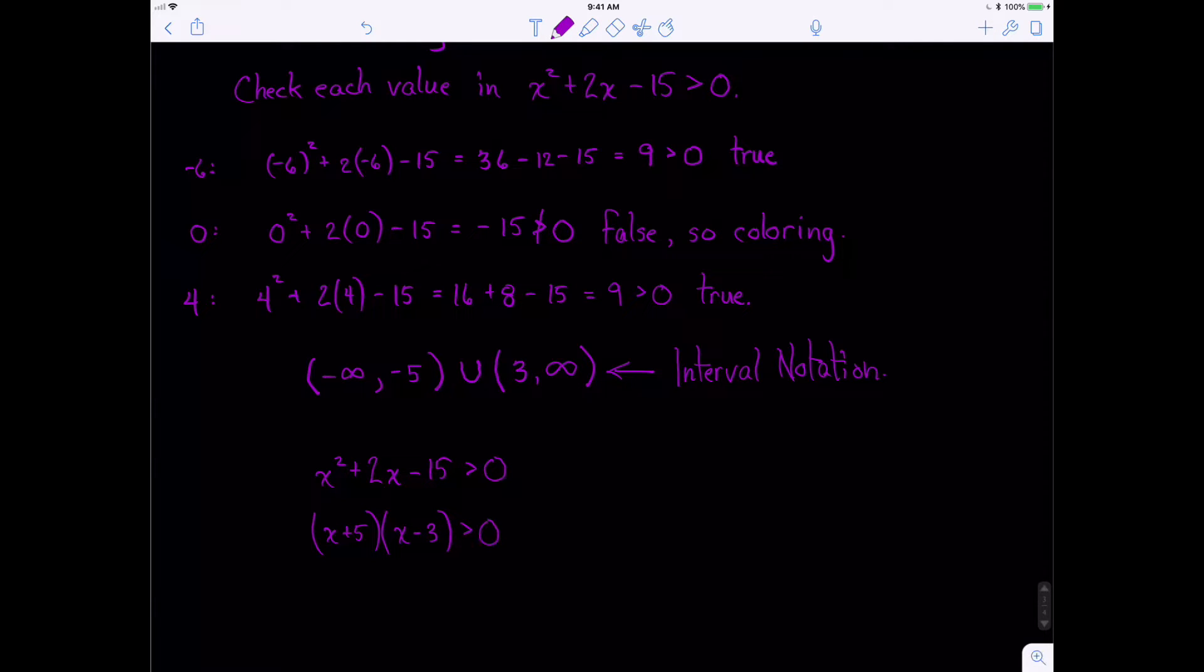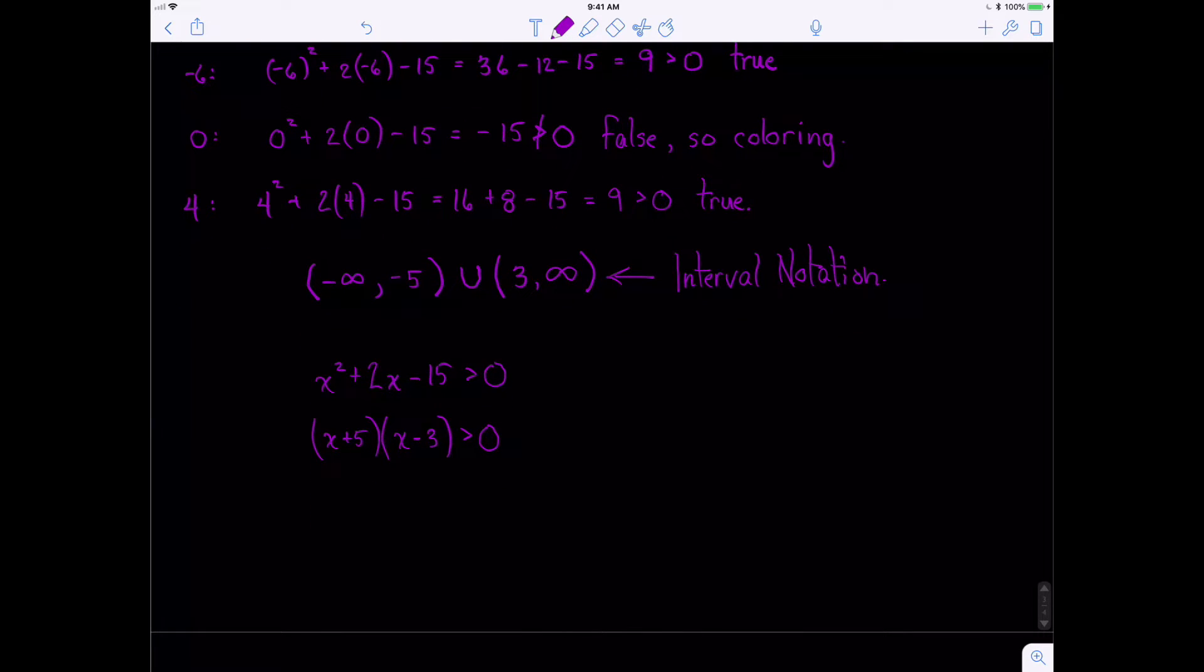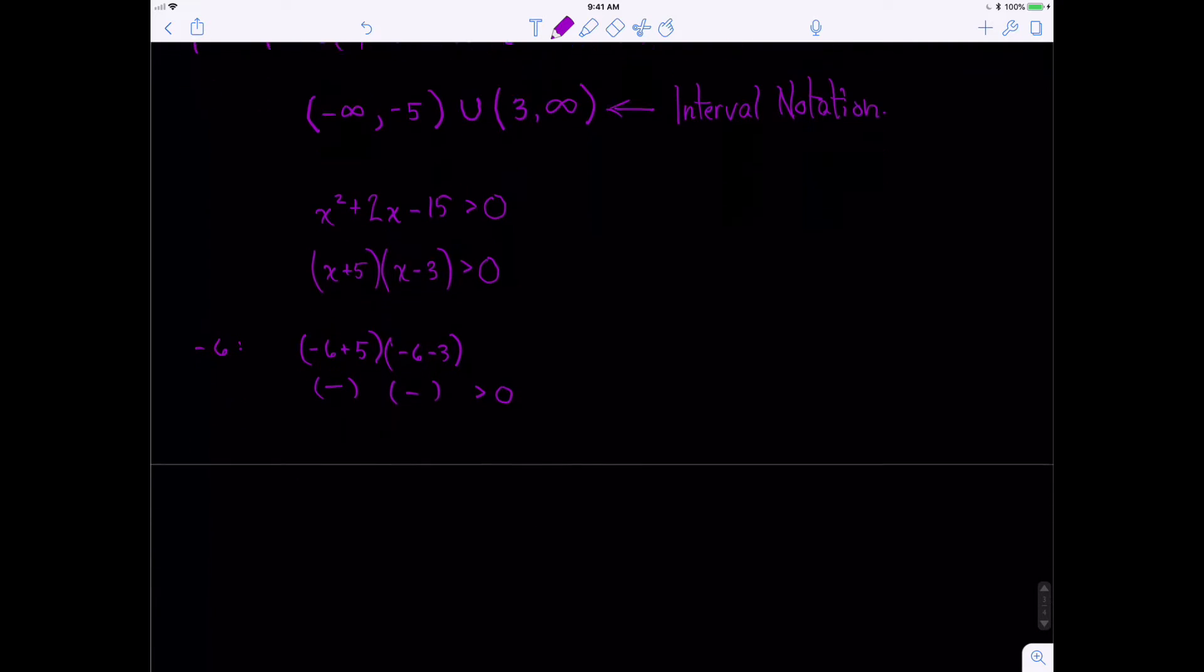notice that we know that it factors into x plus 5 times x minus 3, where that's greater than 0. So another way you can look at this is when we check negative 6, we know that if we put in negative 6 plus 5, that's going to be a negative result. When we put negative 6 minus 3, we know that that is also negative. If you multiply two negatives, you know it's a positive number. So sometimes, if it factors, you can use the way it factors to even do your checks more quickly.